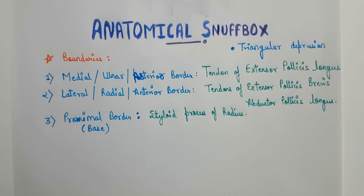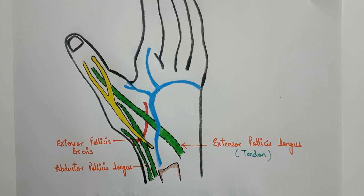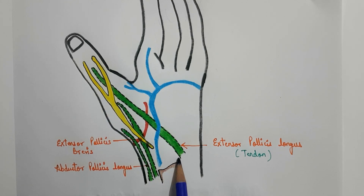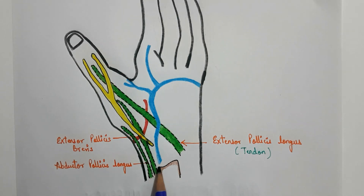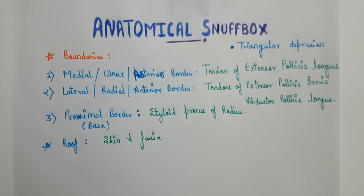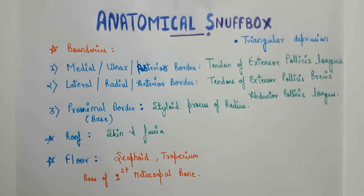The base, also referred to as the proximal border, is formed by the styloid process of the radius. This is the proximal border or base formed by the styloid process of the radius bone. The roof is formed by the skin and fascias. The floor is formed by two carpal bones — the scaphoid bone and the trapezium bone — and the base of the first metacarpal bone also forms part of the floor.